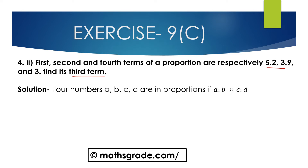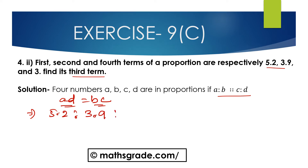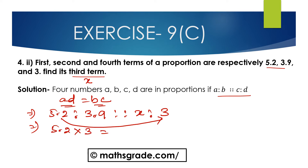Here the first, second and fourth terms are given and we have to find the third term. Four numbers A, B, C, D are in proportion: A is to B is proportional to C is to D, meaning AD equals BC. So 5.2 is to 3.9 is proportional to x is to 3. Product of extremes is 5.2 multiplied with 3, which equals 3.9 multiplied with x.